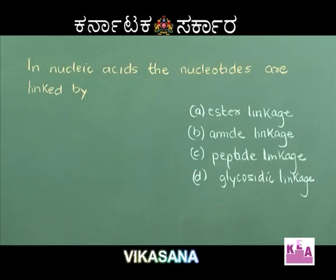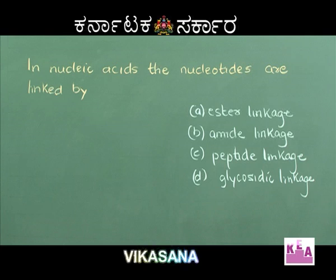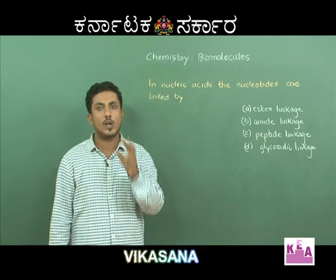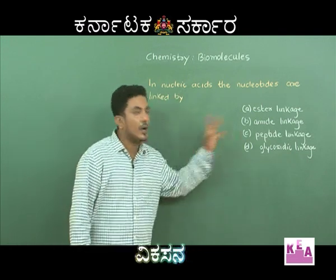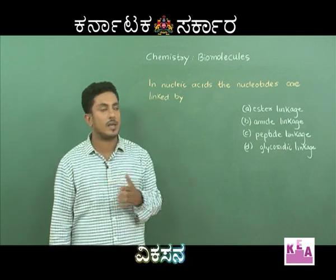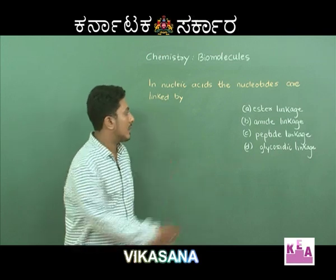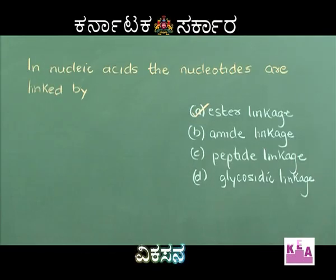In nucleic acids, the nucleotides are linked by: Option A ester linkage, Option B amide linkage, Option C peptide linkage, Option D glycosidic linkage. Glycosidic linkage is present between two monosaccharide units; peptide or amide linkage is present between amino acids. Between nucleotides, a phosphodiester linkage is present. Hence, Option A, ester linkage, is the right answer.